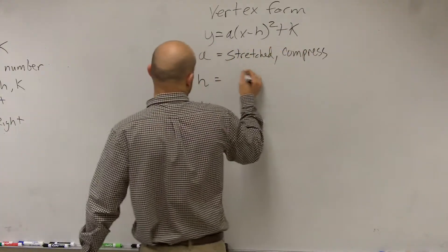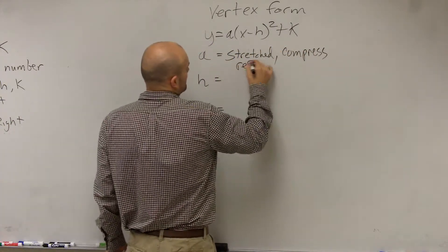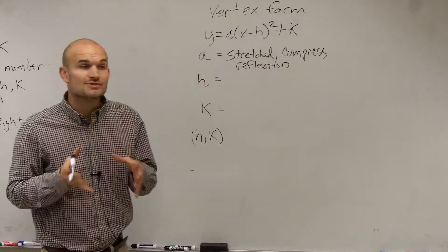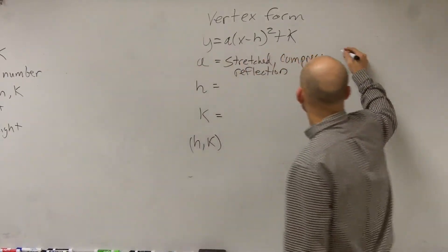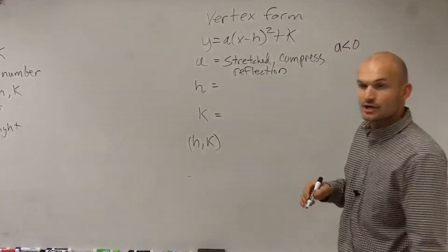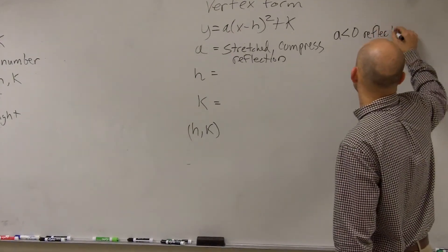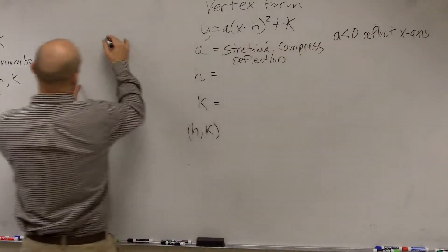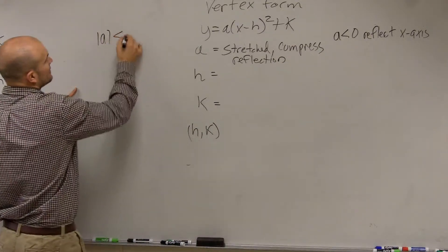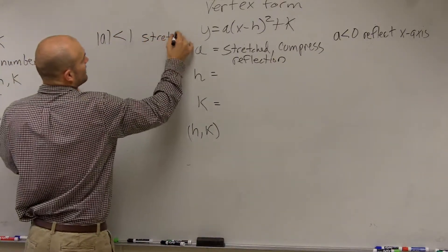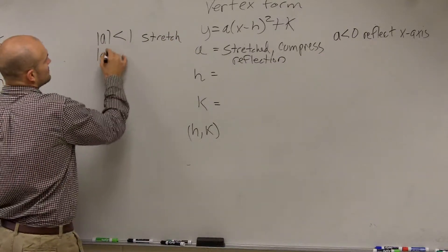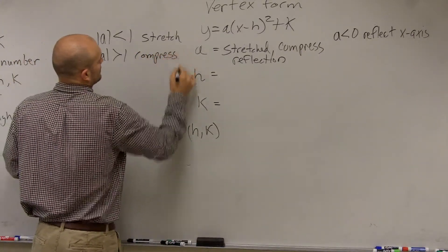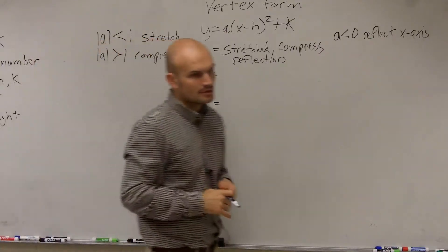a is also going to tell us if we're going to have a reflection. Right? So a also tells us if we have a reflection. And the way that it works, if a is less than 0, that means we reflect the x-axis. All right? And the other one that works out if a, if the absolute value of a is less than 1, then our graph is stretched horizontally.